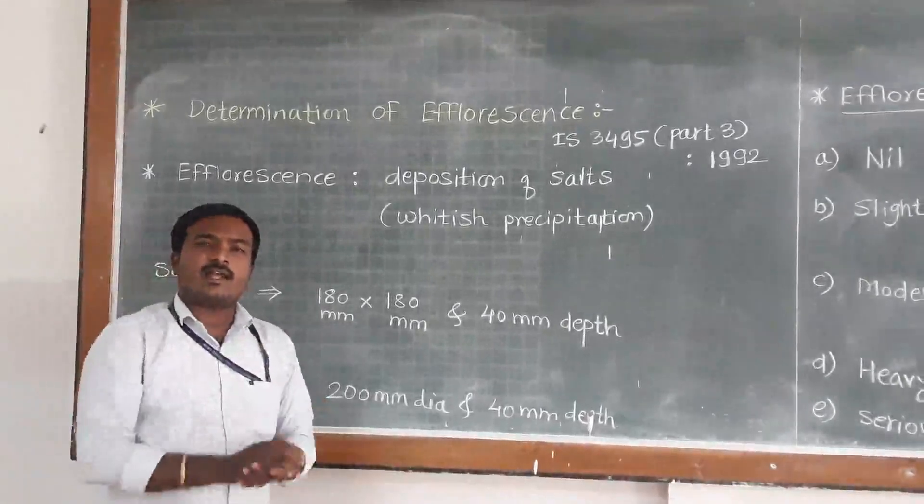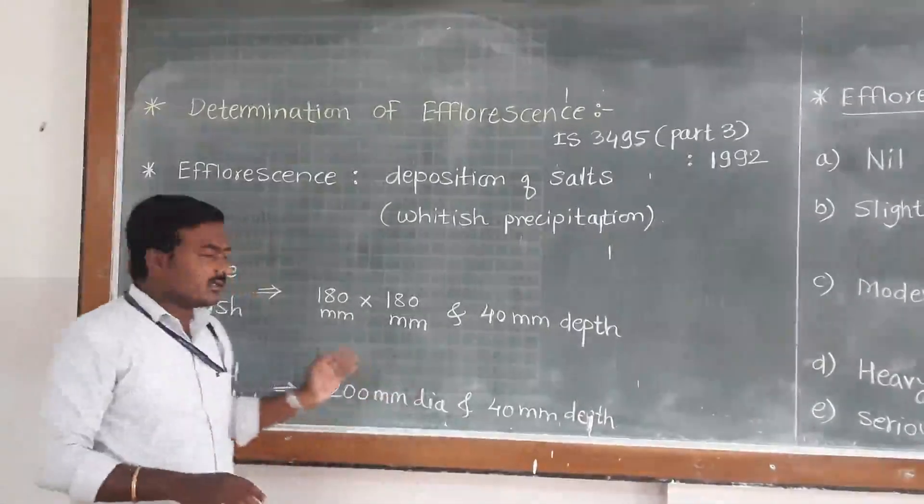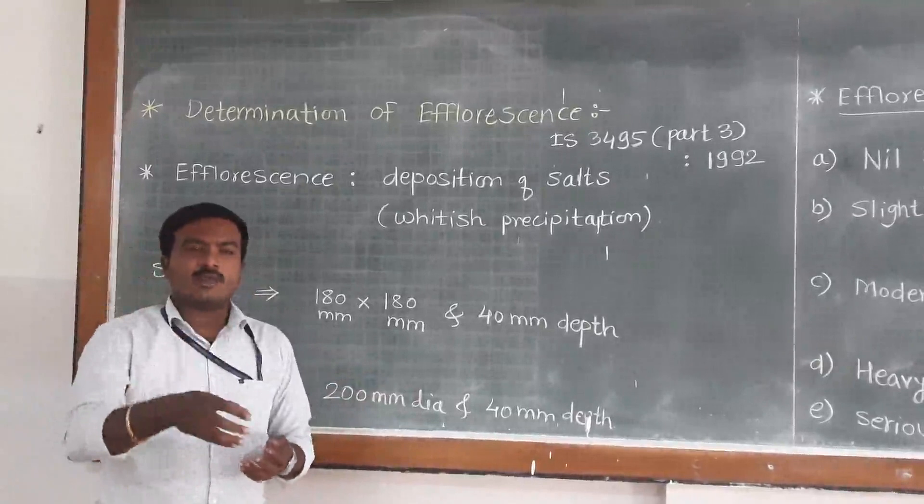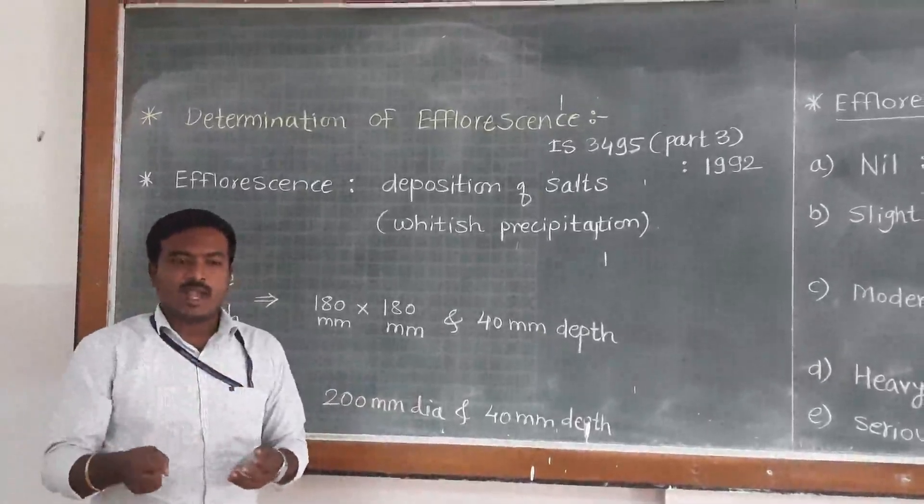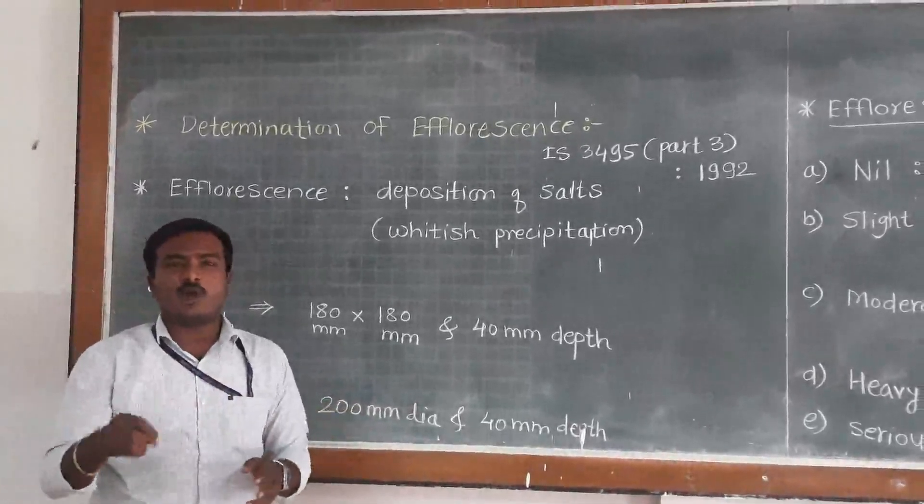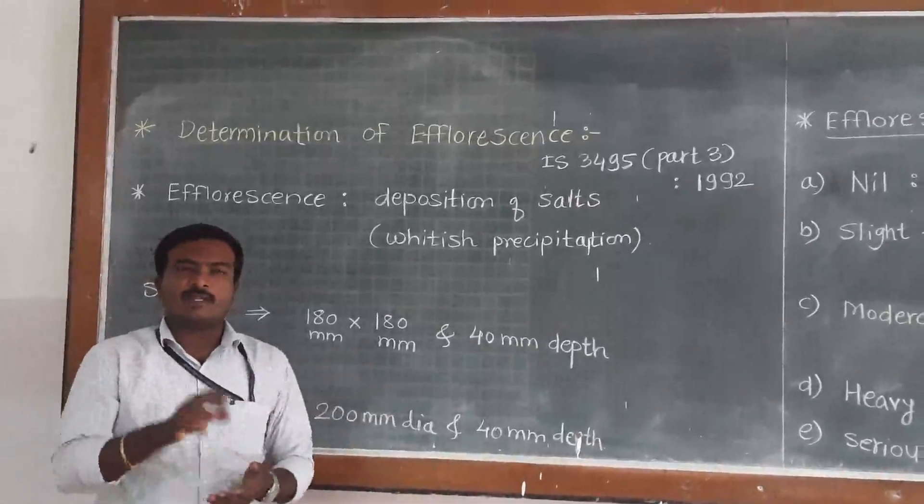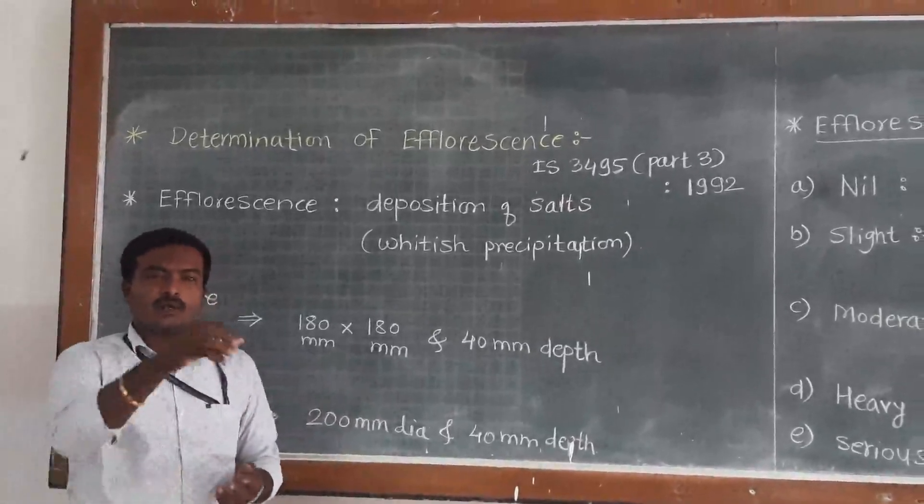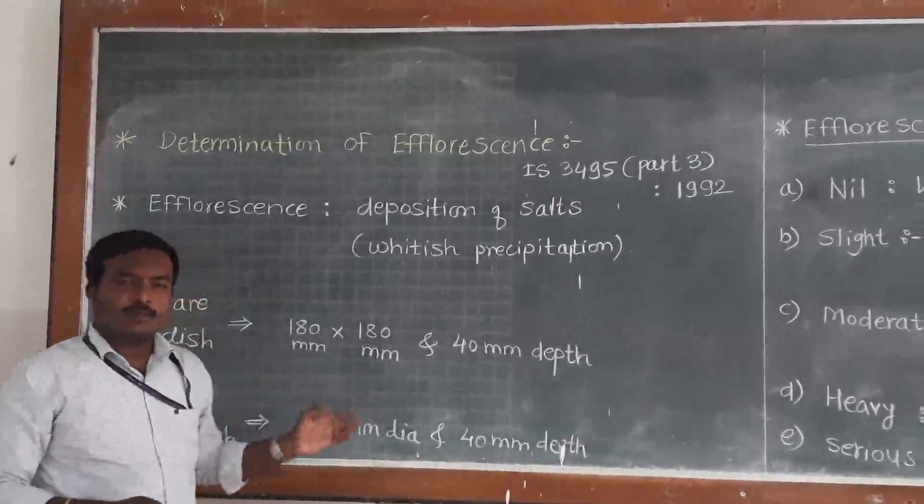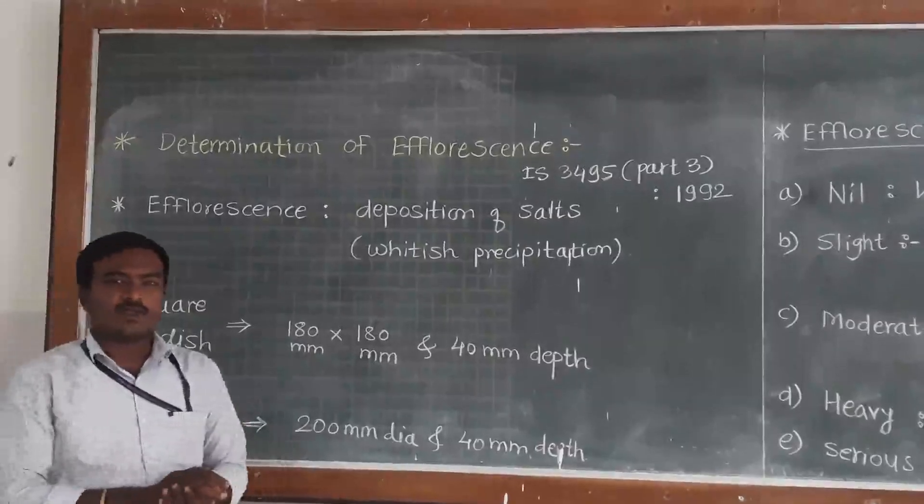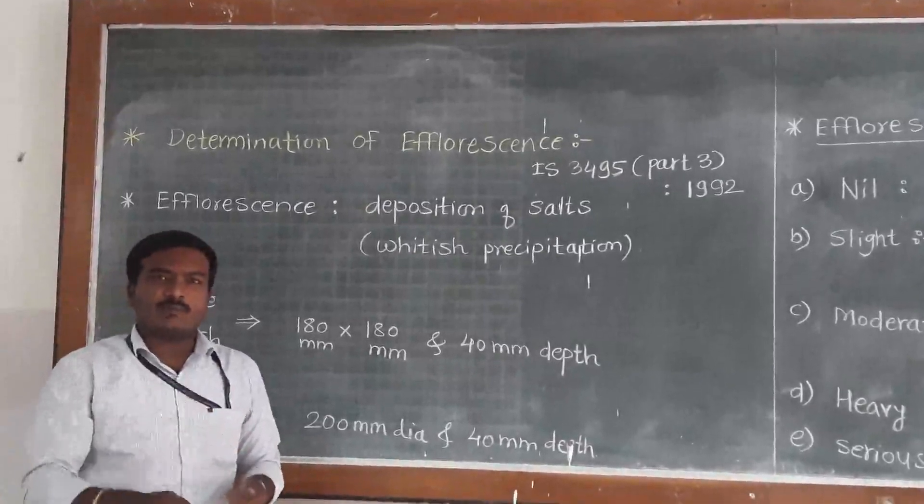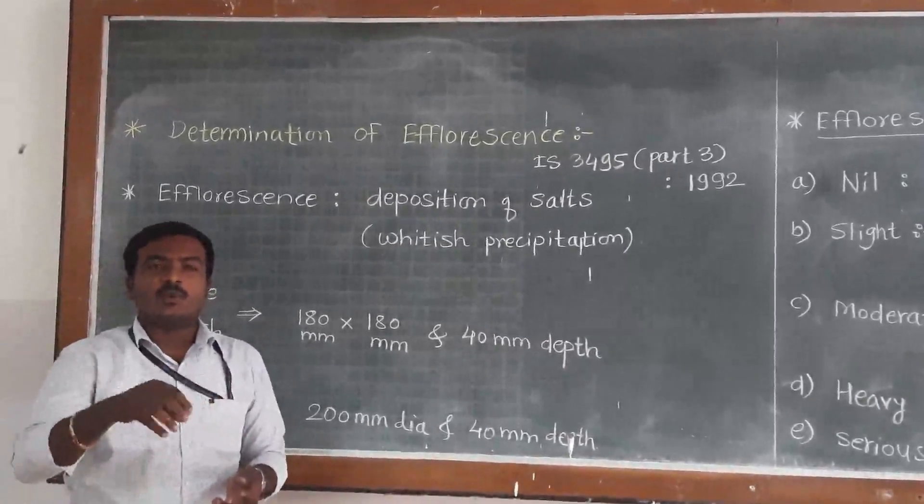First, we fill the dish with distilled water. The brick will absorb that water until all water is absorbed or evaporated. After that, we have to pour water again and repeat the same procedure. Again, the water should be absorbed by the brick and some water will evaporate.